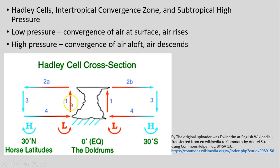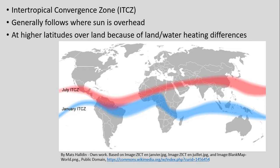The intertropical convergence zone is roughly at the equator, although as this image shows us, it actually varies throughout the year. We have two extremes: the January intertropical convergence zone shown on the bottom in blue, and the July intertropical convergence zone in red on the top, tracking between these areas between those months. This is generally following where our sun is directly overhead — the subsolar point — which occurs somewhere between 0 and 23.5 degrees north or south throughout the year.